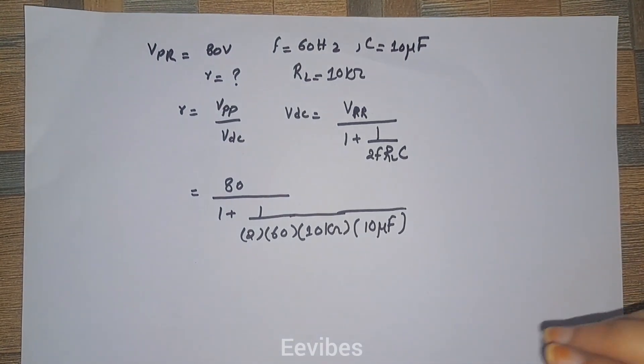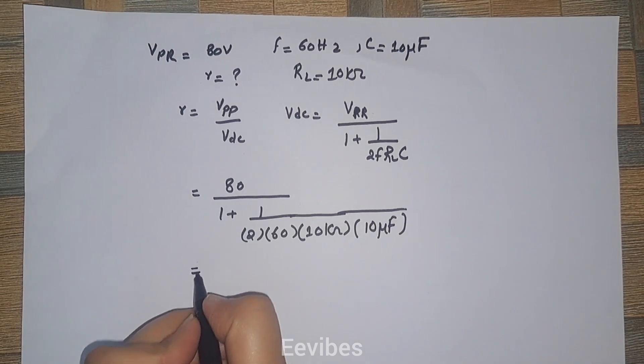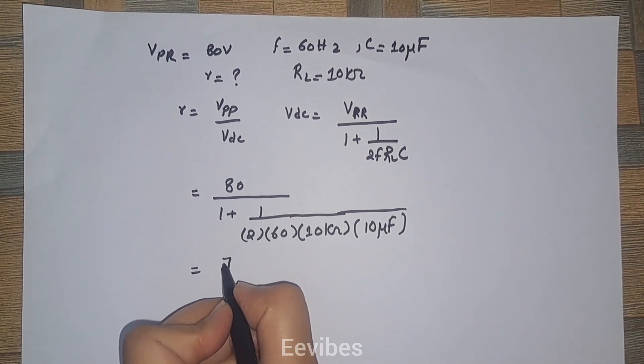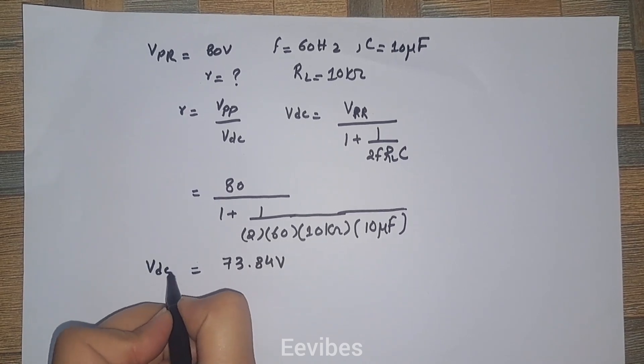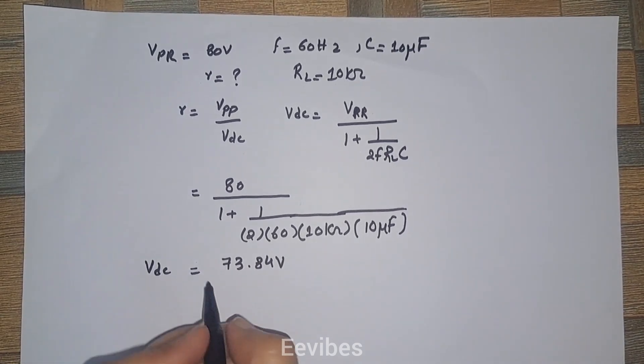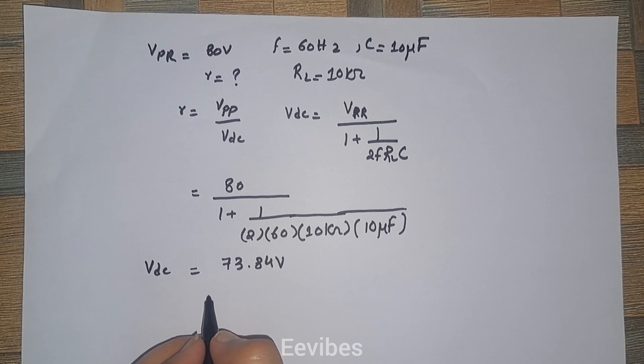On the simplification of this expression, you are going to get V DC equal to 73.84 volts. This is the value of V DC. Once you are having the value of V DC, you can easily evaluate the value of V peak to peak.